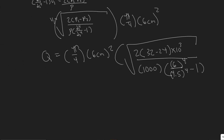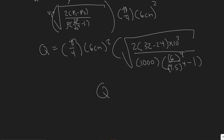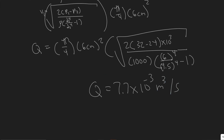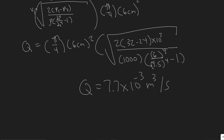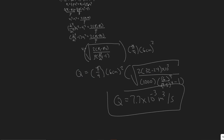Multiplying everything out, Q is approximately 7.7 times 10 to the minus 3 meters cubed per second. Keep in mind this is per second since we're looking at a rate — volume per second is how we measure what they're looking for. So the volume rate of flow is 7.7 times 10 to the minus 3 meters cubed per second.